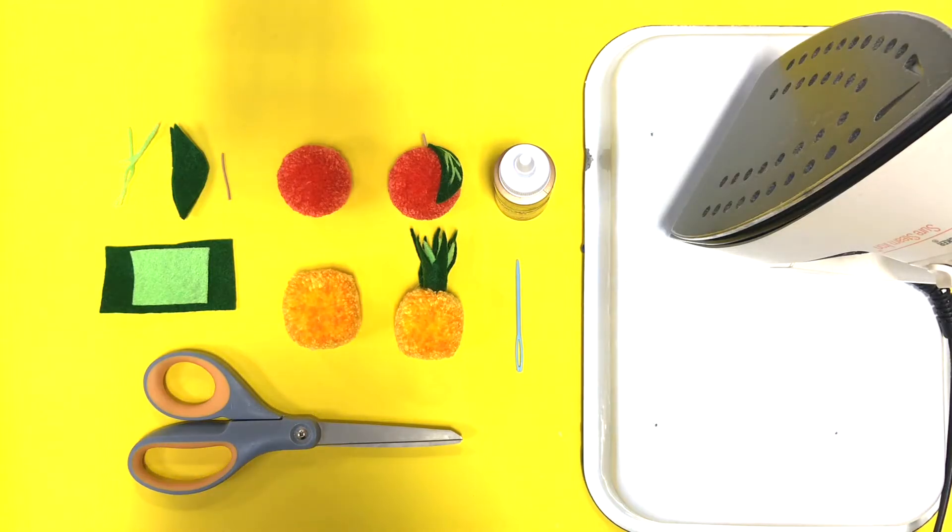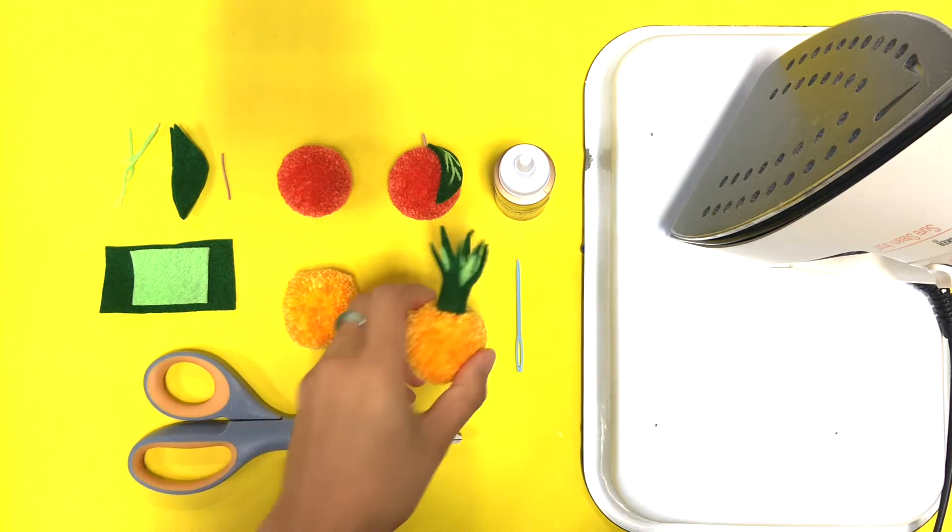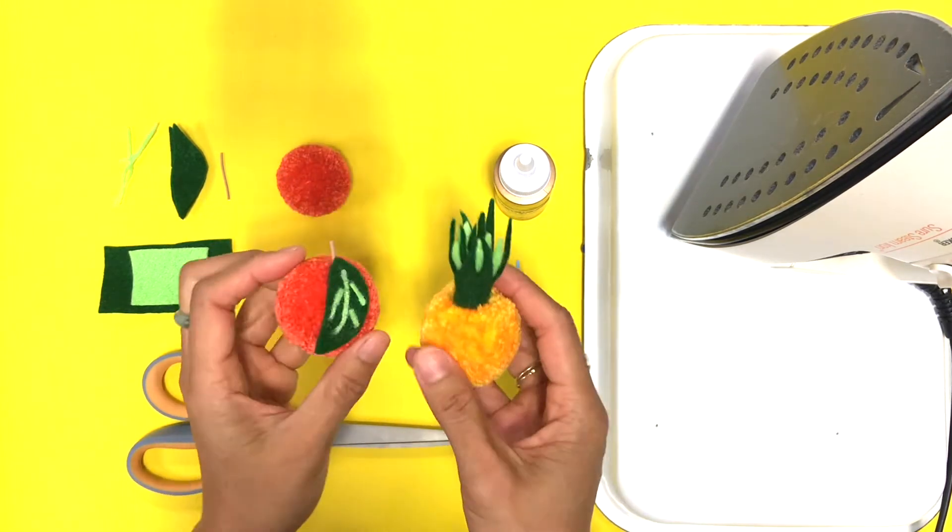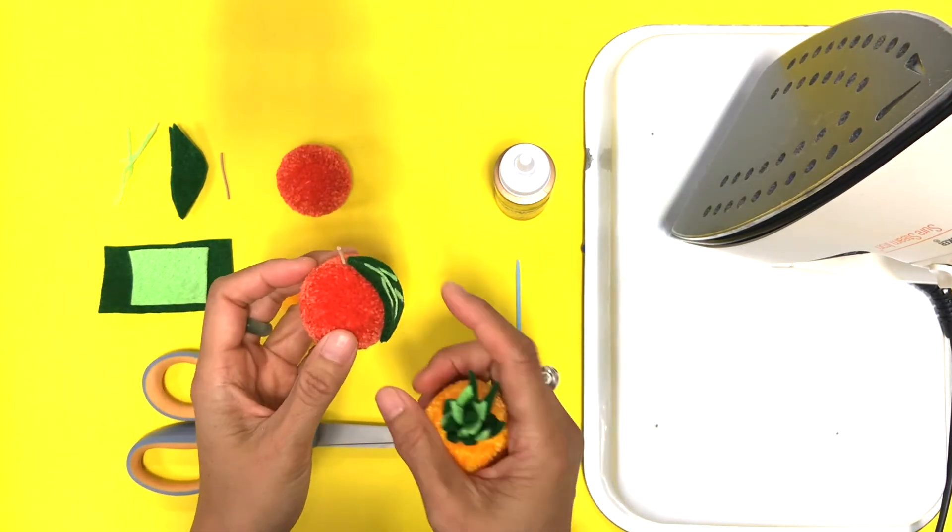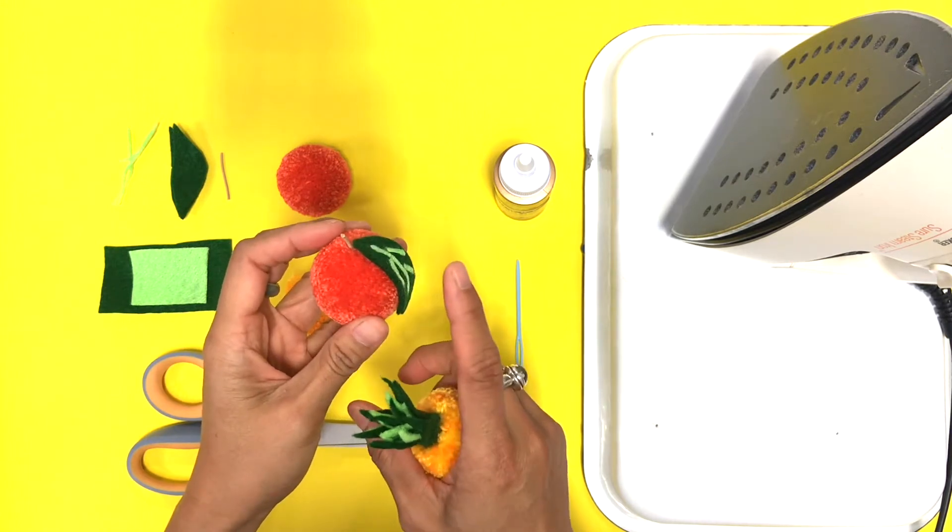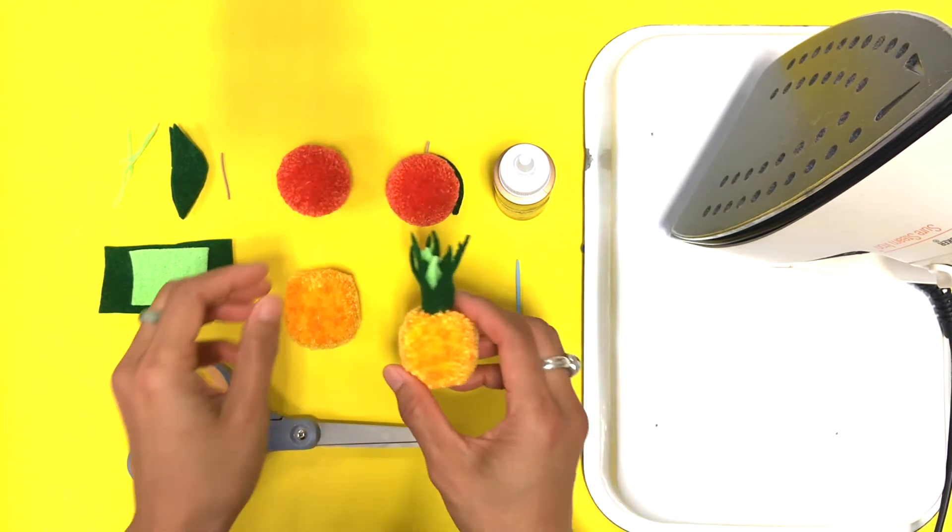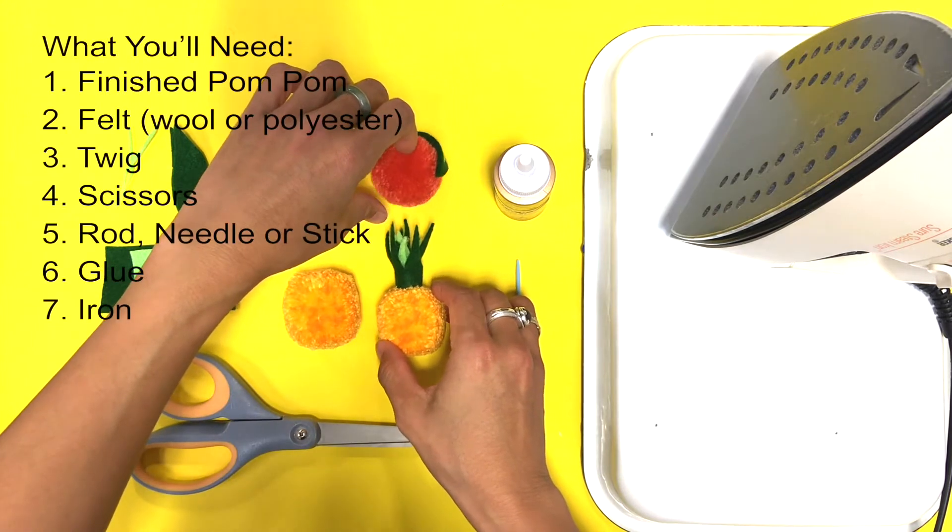Hi luminaries, today I'm going to show you how to add felt details to your pom-pom to make different types of fruit. We're going to focus on making an orange today and a pineapple.